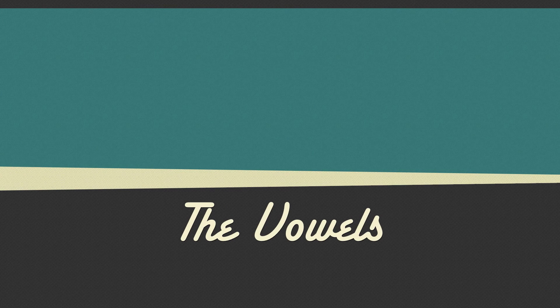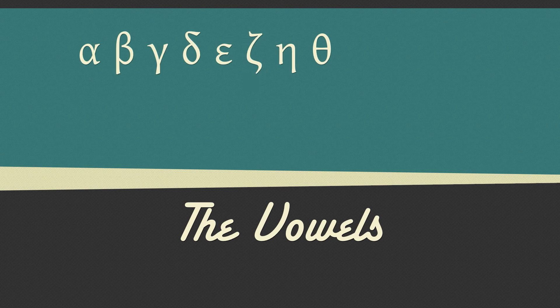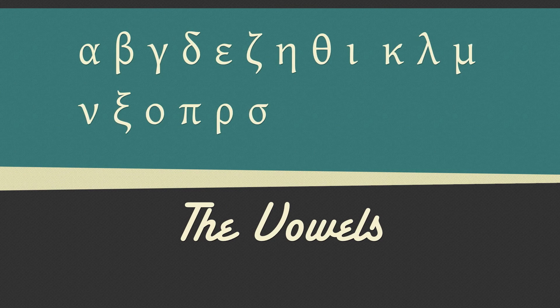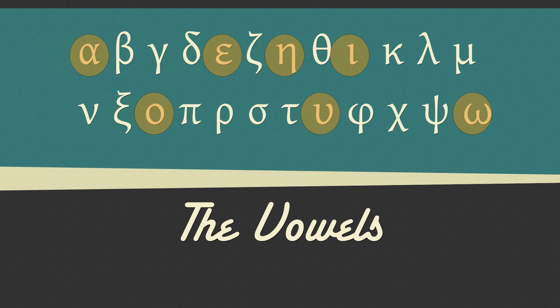Greek has numerous vowels just like English: alpha, epsilon, eta, iota, omicron, upsilon, and omega.